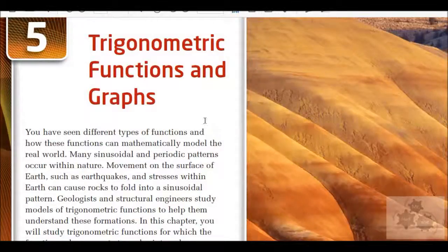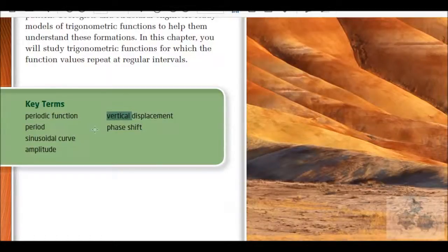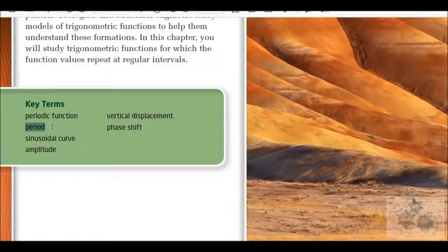So this lesson we're starting chapter 5, trigonometric functions and their graphs. We've been dealing with trig functions like sine, cosine, tan, and reciprocal functions like cosecant, secant, and cotangent. Now we're going to talk about the graphs of those. We're also going to get into the very important concept of transformations — vertical transformation, phase shift which is the horizontal translation, amplitude which is the vertical stretch, and period which is the horizontal stretch. We're going to look at sine and cosine graphs in the first section, then look at how the different parameters work to change those graphs.